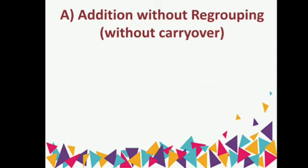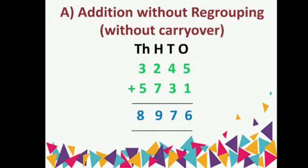Now, in addition we have two types. Addition without regrouping means without carryover. For example, here the numbers are 3245 and 5731. We add these two numbers by writing according to the place value system.